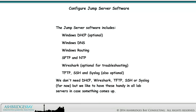The Jump server software includes Windows DHCP (optional), Windows DNS, Windows Routing, SFTP and NTP, Wireshark (optional, for troubleshooting), TFTP, SSH, and Syslog (also optional). We don't need DHCP, Wireshark, TFTP, SSH, or Syslog for now, but we like to have these handy in all lab servers in case something comes up.